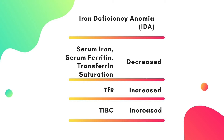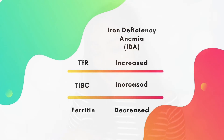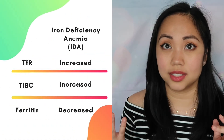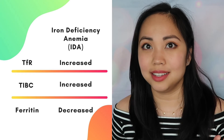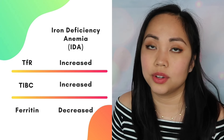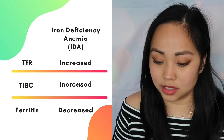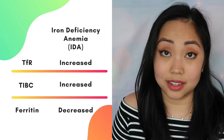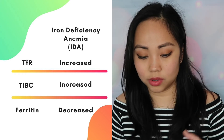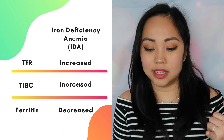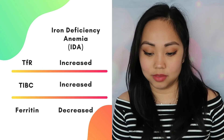For iron deficiency anemia, everything is down except for TIBC and the transferrin receptor, and there is no ferritin in the bone marrow. The body compensates by increasing transferrin and transferrin receptors because it thinks iron isn't being transported properly. So remember for IDA: TIBC up, transferrin receptor up, and zero ferritin.